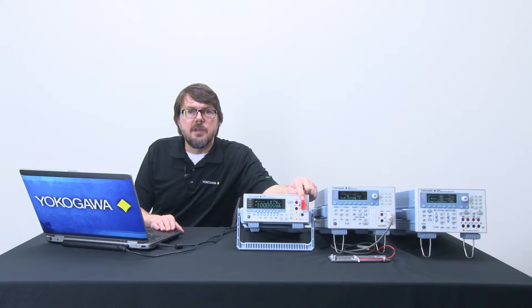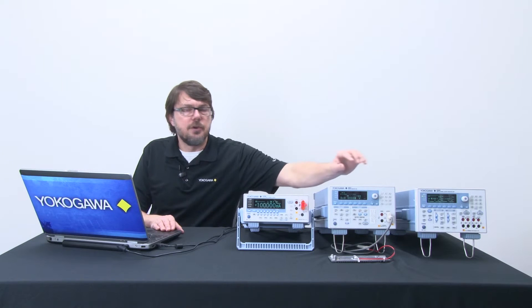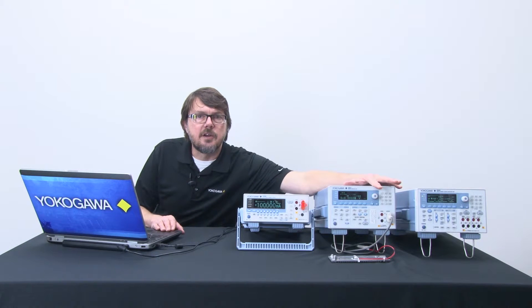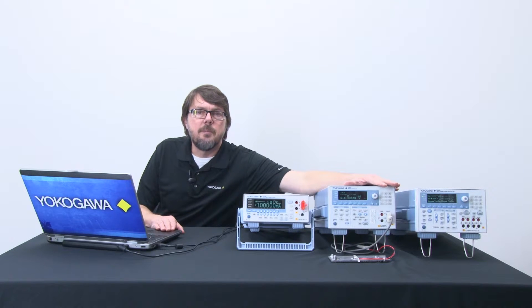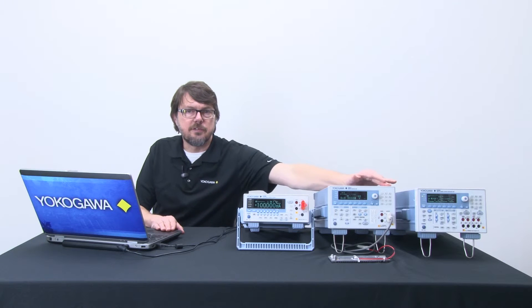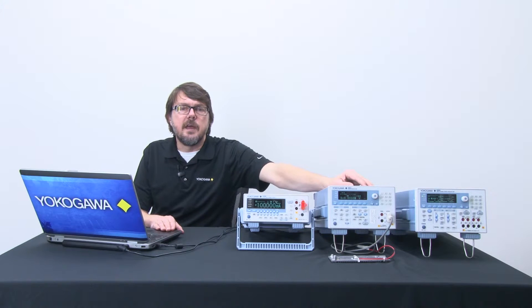Then I will sweep a light emitting diode with a more capable source measure unit, the GS610, and a curve tracer software. So just like the diode, I will sweep voltage and measure current and then plot current versus voltage in the curve tracer software. You will also see the LED output vary with input current.